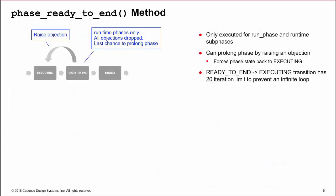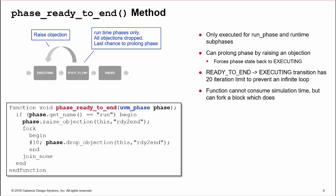The ready_to_end hook method is a special case. The method is called in state ready_to_end, which is entered for run phases and sub-phases when the last objection is dropped. The method can prolong the phase by raising an objection and forcing the phase state back to executing. Obviously, there's a danger here of an infinite loop, so there is a built-in iteration limit of 20 cycles, after which the state is forced to ended.